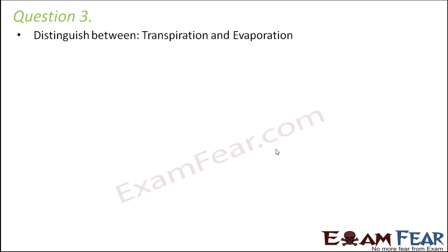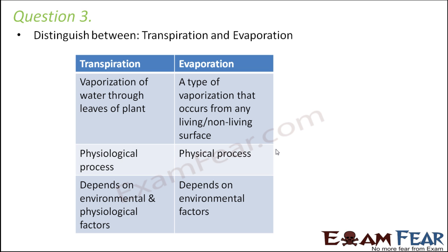Question: distinguish between transpiration and evaporation. Transpiration is a special type of evaporation — it is the evaporative loss of water specifically from the leaves of a plant. Evaporation is a general physical process that can happen anywhere: for example, when you boil a cup of water, some of the water evaporates as water vapor. Evaporation can occur from any surface, whether living or non-living.